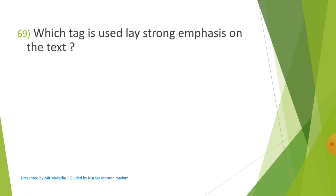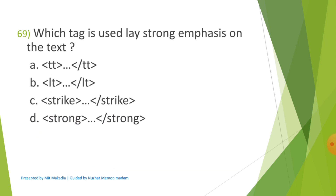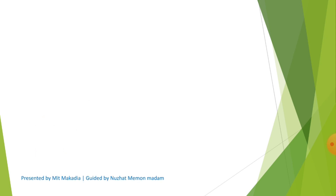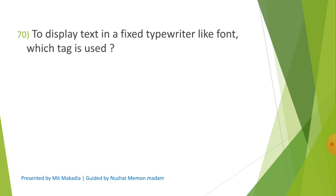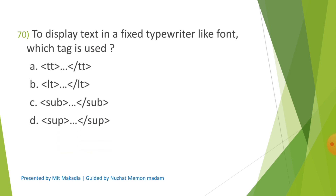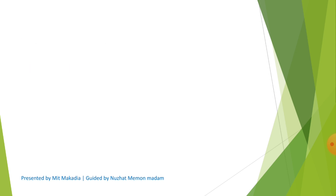Question 69: Which tag is used to lay strong emphasis on text? Options are A) TT, B) LT, C) Strike, D) Strong. The correct answer is D) Strong. Question 70: To display text in a fixed typewriter-like font, which tag is used? Options are A) TT, B) LT, C) SUB, D) SUP. The correct answer is A) TT.